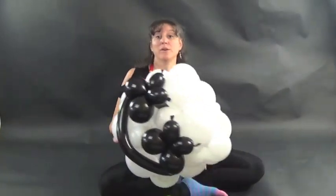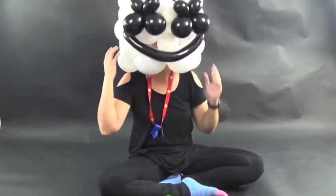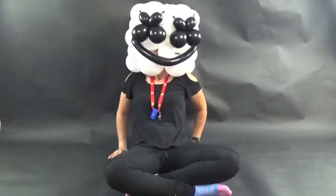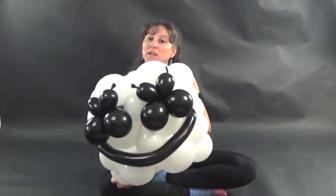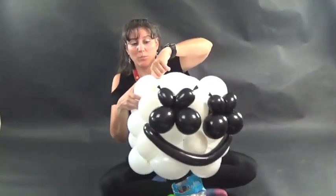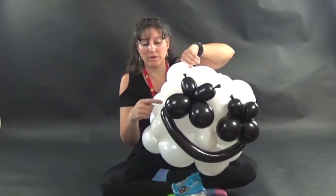And if you feel like you just really need to fill in more gaps, you can grab some white five inch rounds. You're going to inflate them to about two inches in diameter or two fingers. And you can put two at every connection point.